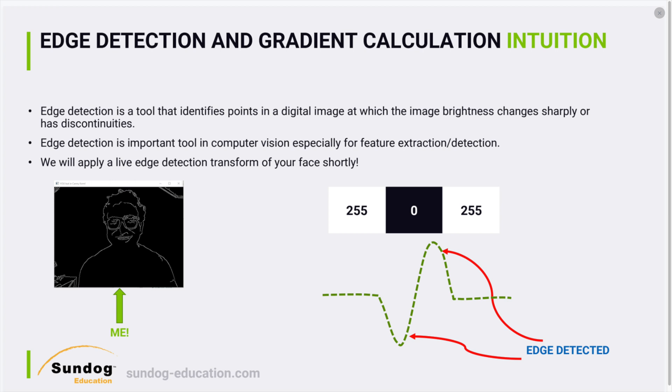Up to this point we learned how to obtain an image and extract different colors from it — how to detect lanes within an image, how to extract white pixels, how to work with grayscale images. We also know how to convert from color scale to grayscale, to HSV, and so on. We also learned how to take an image and apply a convolution to blur or sharpen it. Now we move to one of the most important techniques: edge detection and gradient calculation.